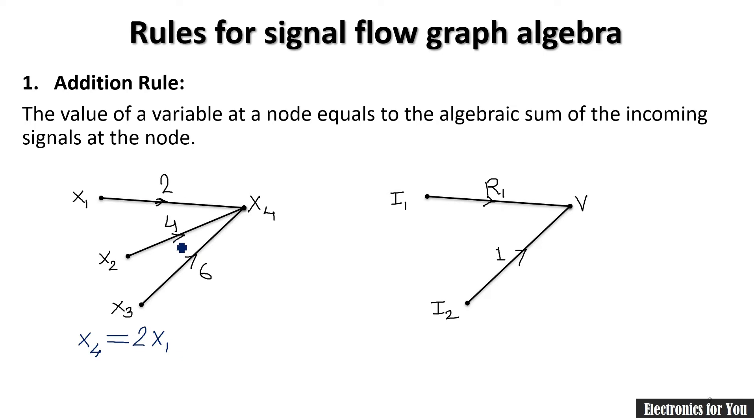It can be written as 2 multiplied by x1 because x1 is our first variable. This signal is also going toward x4, therefore plus sign will be there, 4 times x2 plus 6x3, and this is the equation for x4 by using addition rule.